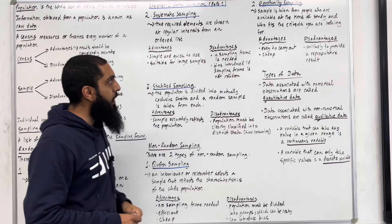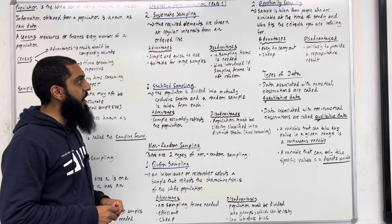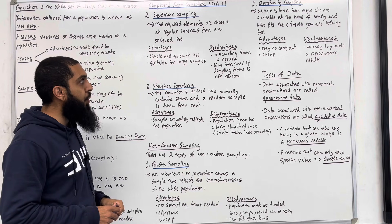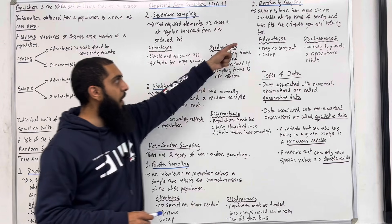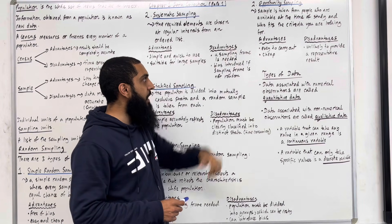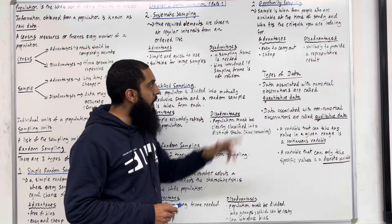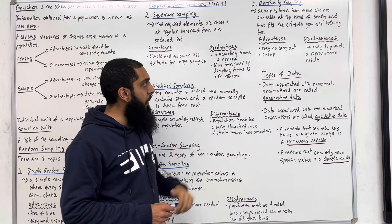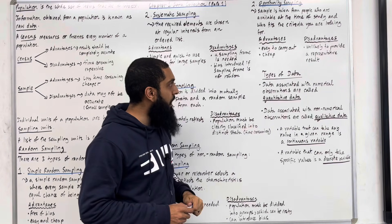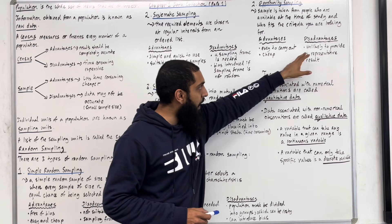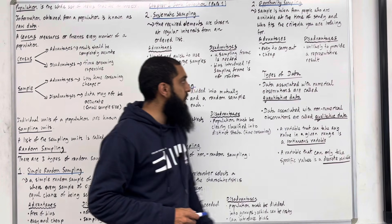Moving on to opportunity sampling. A sample is taken from people who are available at the time of the study and who fit the criteria you are looking for. The advantages are: number one, easy to carry out; number two, cheap. The disadvantage is that it is unlikely to provide a representative result.